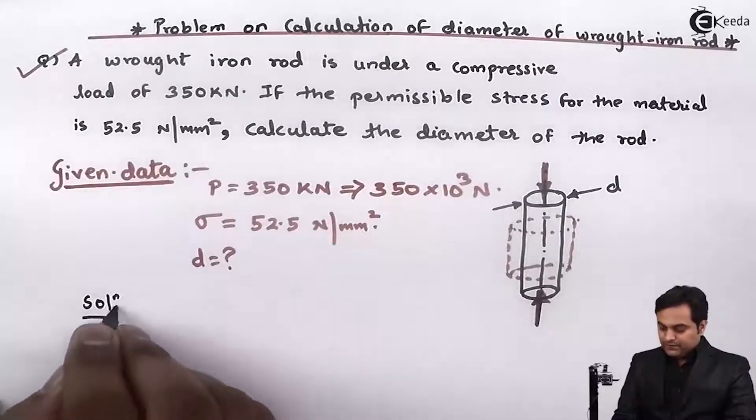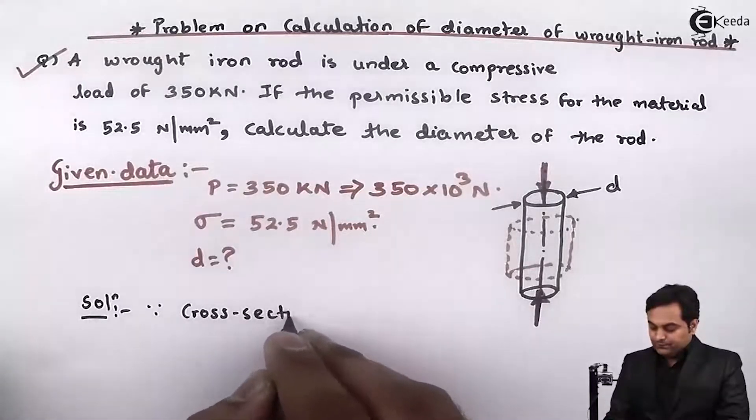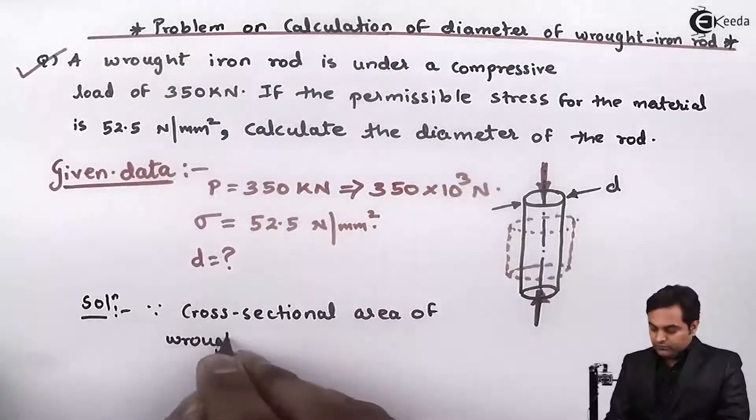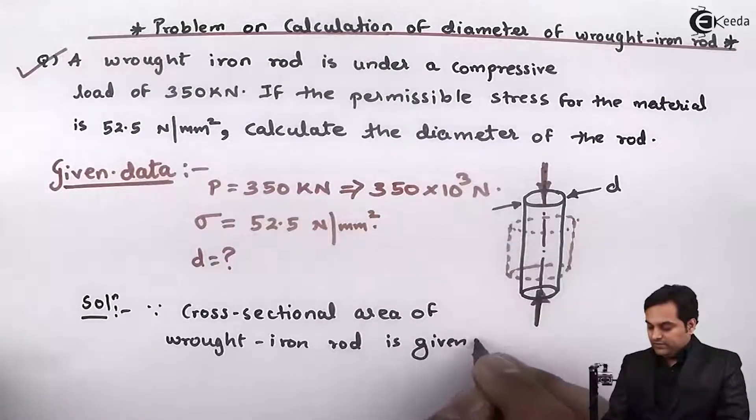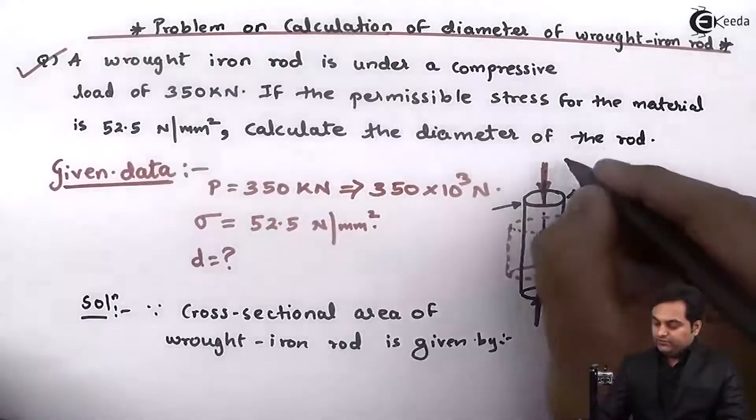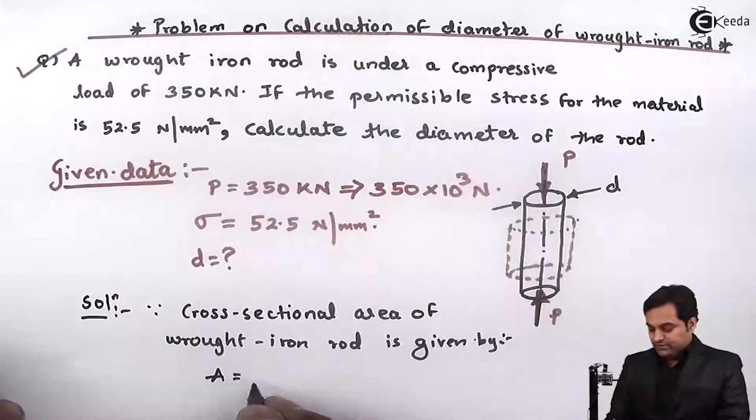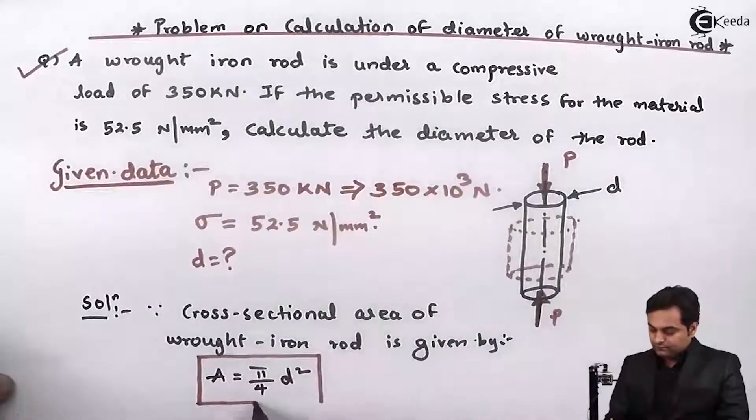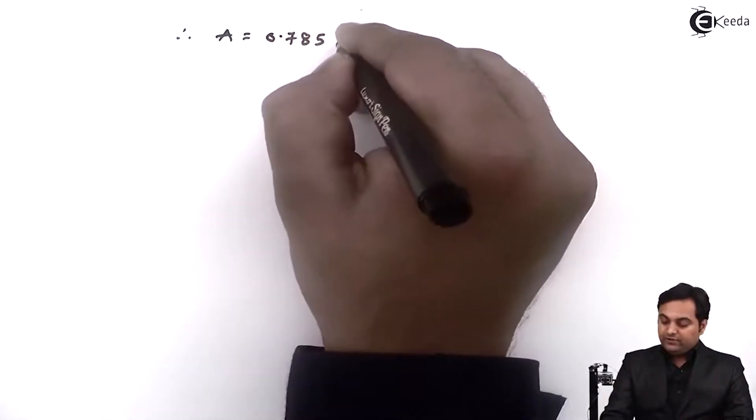Since the cross-sectional area of wrought iron rod is given by A equals pi by 4 d square, therefore area is equal to 0.785 into d square.